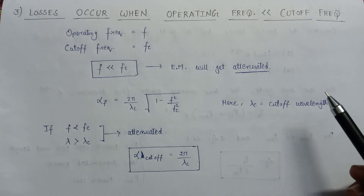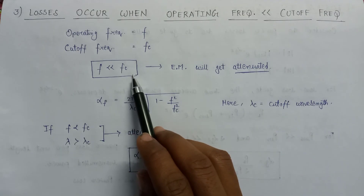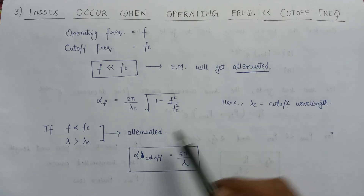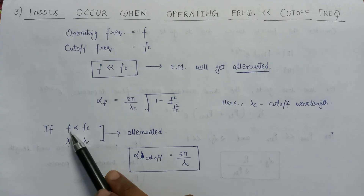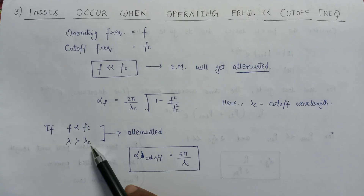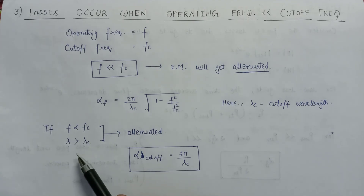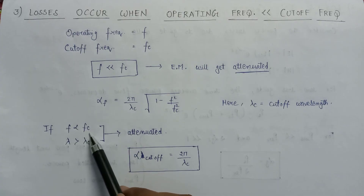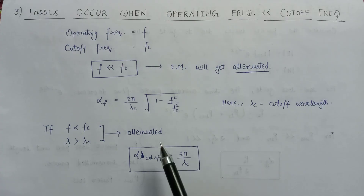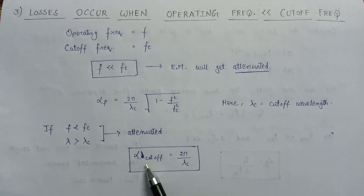There are two conditions associated with attenuation in waveguide. The first condition is when the operating frequency is less than the cutoff frequency. The second condition can be expressed in terms of wavelength: when the operating wavelength lambda is greater than the cutoff wavelength lambda_c, attenuation occurs. In the wavelength domain, the attenuation constant simplifies to 2*pi / lambda_c, where lambda_c is the cutoff wavelength.